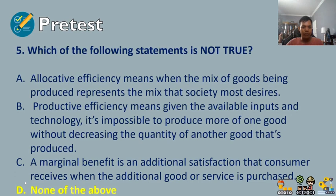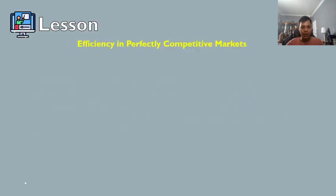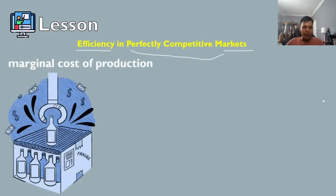Congratulations to those who got the perfect score. Now let's proceed to our lesson. In economics, the marginal cost of production is the change in the total production cost that comes from making or producing one additional unit.